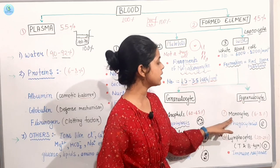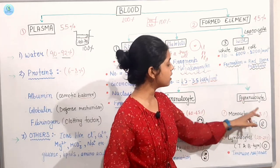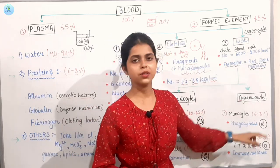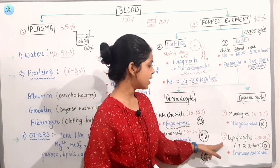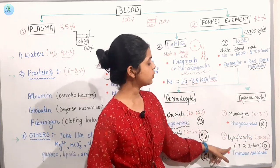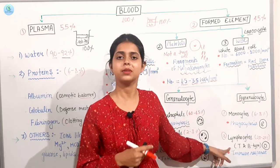If you talk about agranulocyte, which is 6-8%, this is also phagocytosis, which has a nucleus that is bean-shaped. Then the lymphocyte, which is 20-25%.